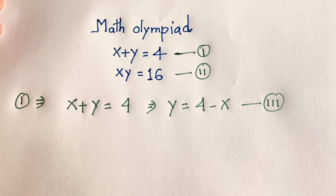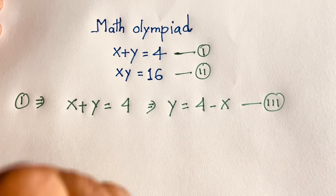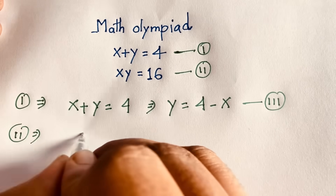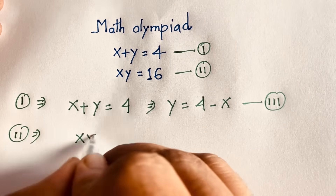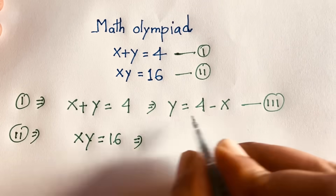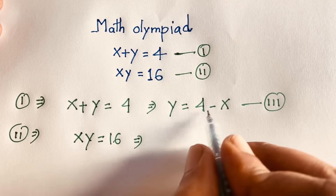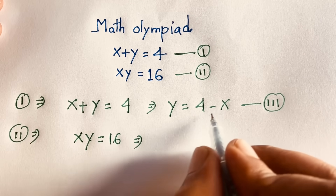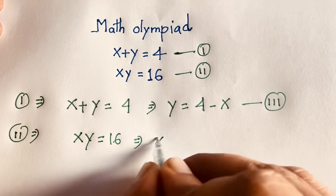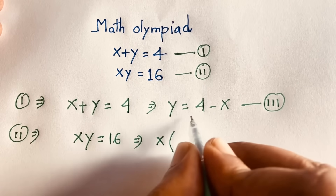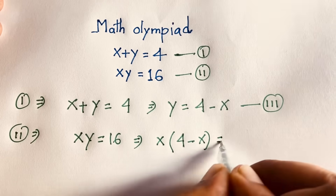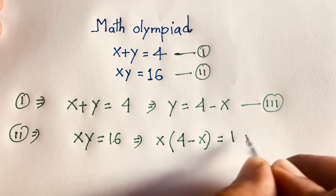Now, looking at our second equation: x times y equals 16. Remember that y equals 4 minus x from our third equation. So I substitute this value in: x times (4 minus x) is equal to 16.